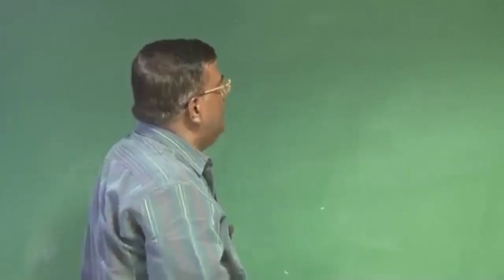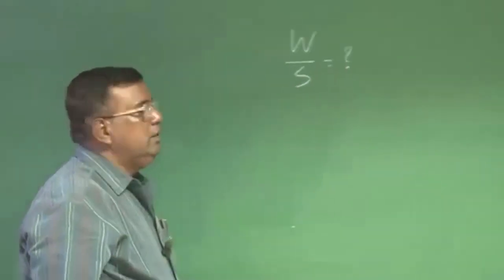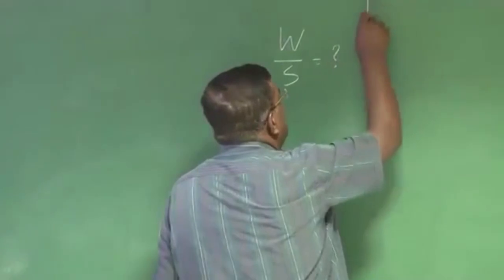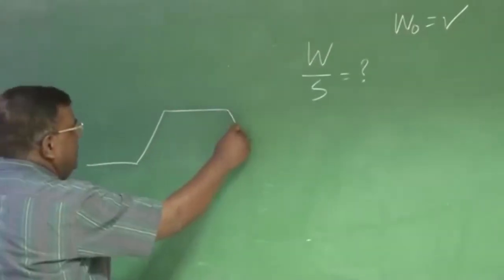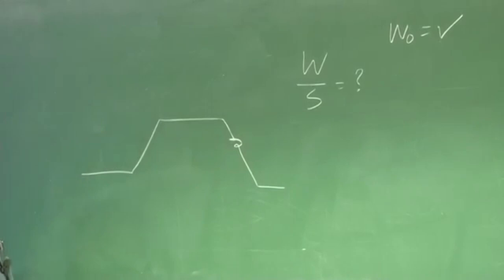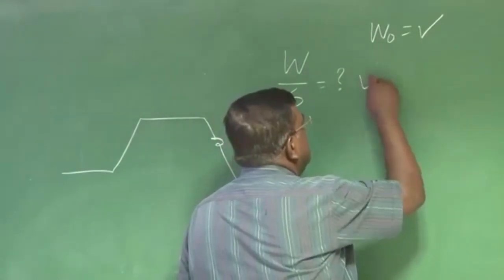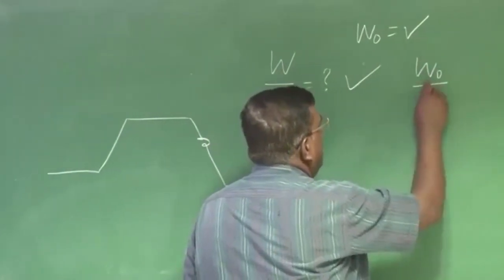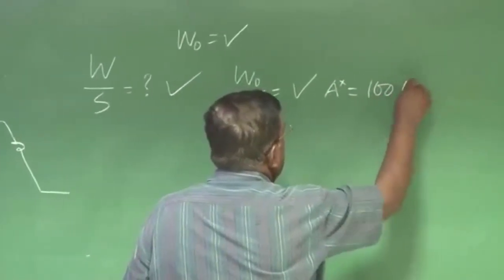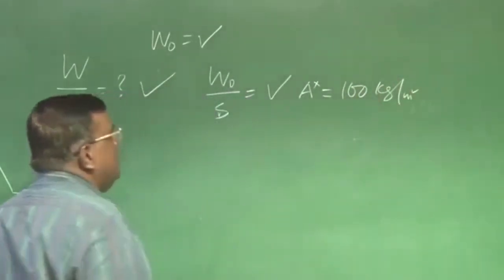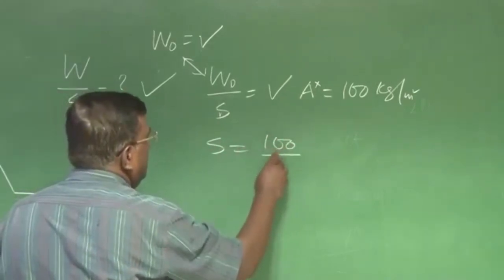We have gone through a rough method to get W by S. What was the final aim? We have already calculated W naught. We know how to calculate W naught by meeting all the emission requirements and taking appropriate care about fuel consumption. So, if I have selected W by S from that value, then I know W naught by S is that value, say A star.